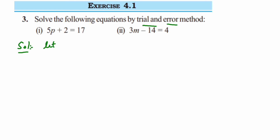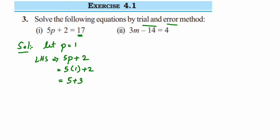It can be negative, positive, or zero. Since the number on the RHS is 17, p has to be a positive number. Let p equal 1. In that case, LHS is 5 into 1 plus 2, which is 5 plus 2, which is 7. But on the RHS we have 17, so LHS is not equal to RHS. Therefore p equal to 1 is not a solution.